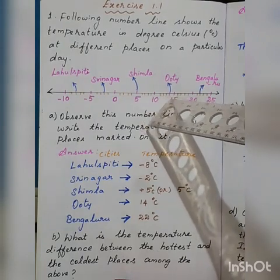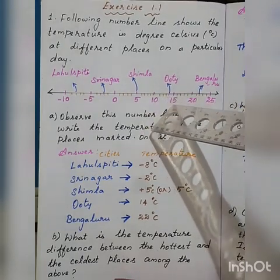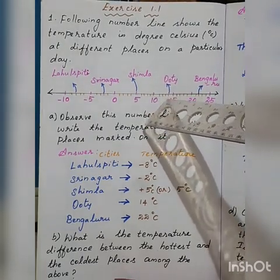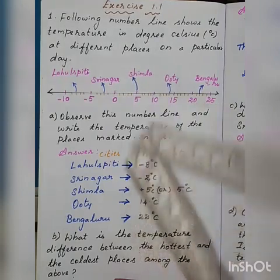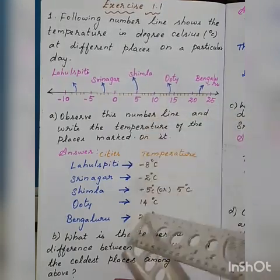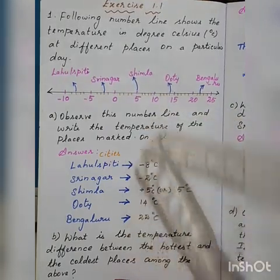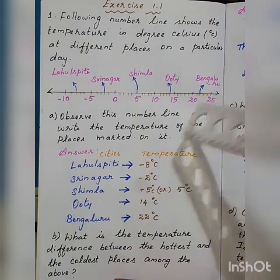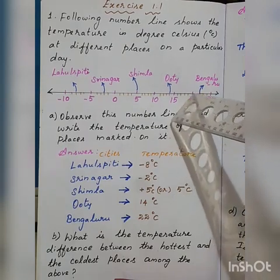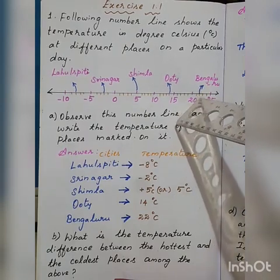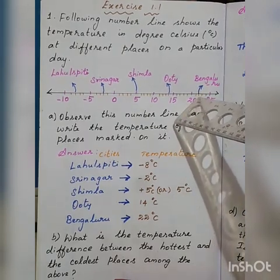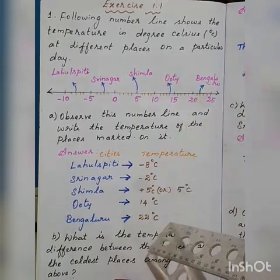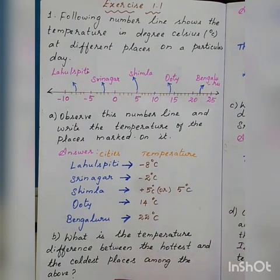And 15 — the integer before 15 is 14 degree. So 14... 15 degree Celsius is Ooty's temperature. And 20 after 2 points is 22 — so 22 degree Celsius is Bengaluru's temperature.